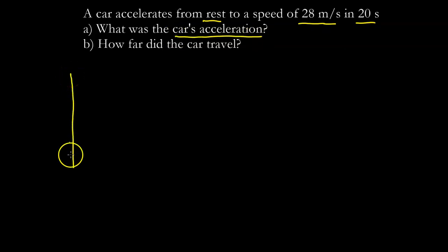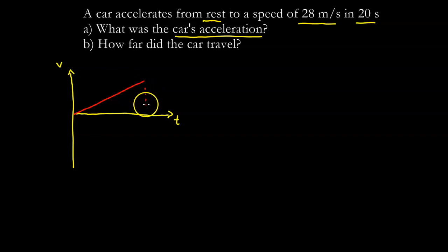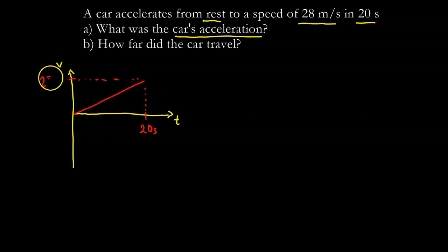First I'm going to draw our velocity graph. This car is going from rest to 28 meters per second in 20 seconds, so I'm going to put 20 right here on the time axis and the final speed is 28 meters per second on the velocity axis.